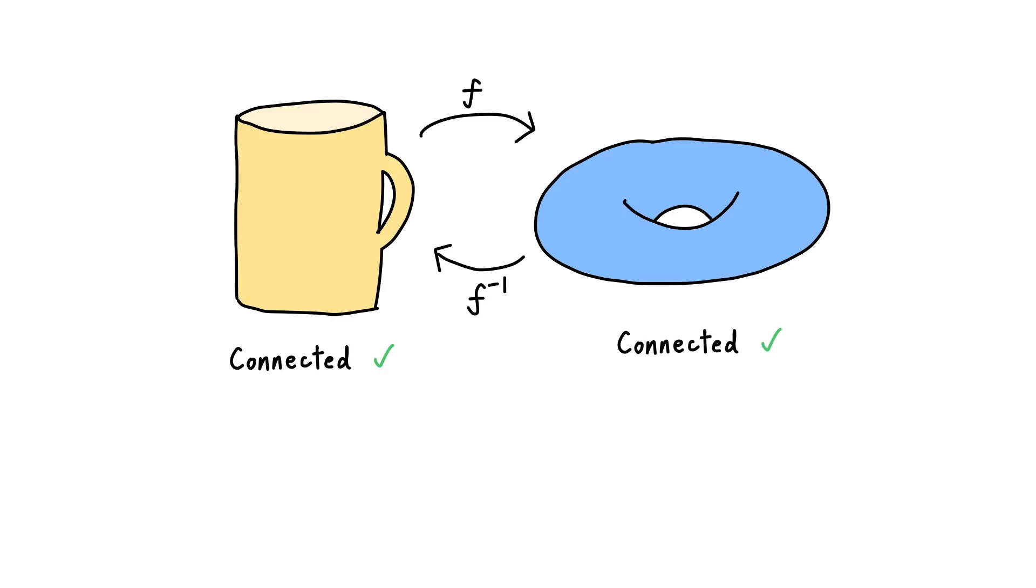For example, they're both connected, they're both compact, and they both have a non-trivial loop, one that cannot be shrunk to a point.